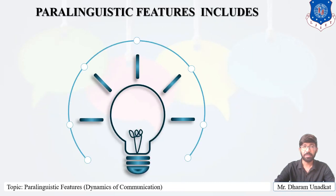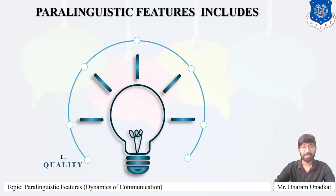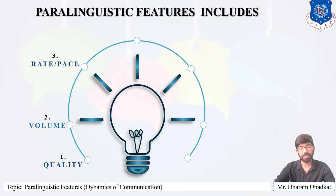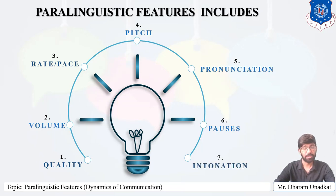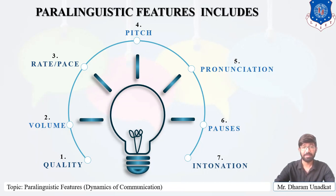Paralinguistic Features includes seven elements. First is quality, second is volume, third is rate or pace, fourth is pitch, fifth is pronunciation, sixth is pauses, and the seventh is intonation. Let's see each one in detail.